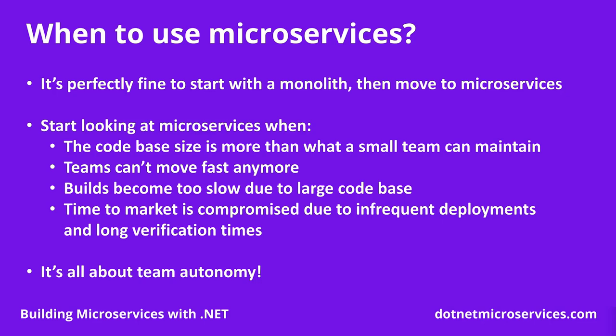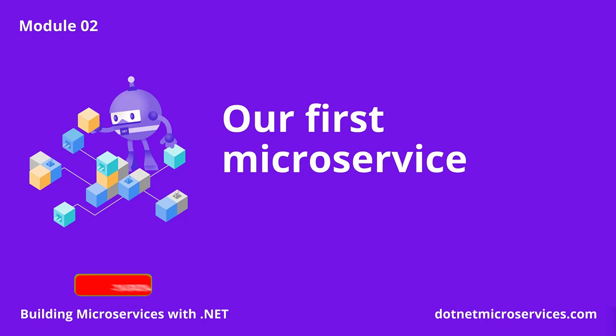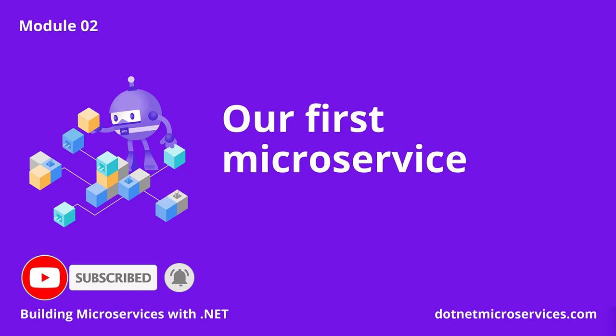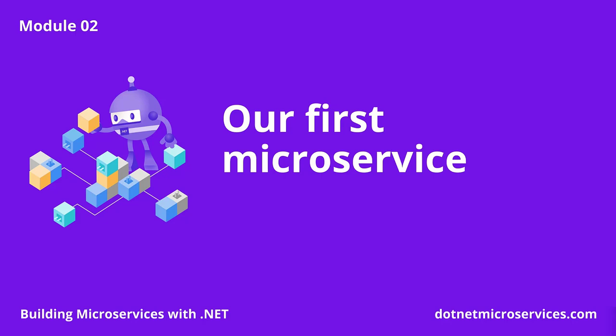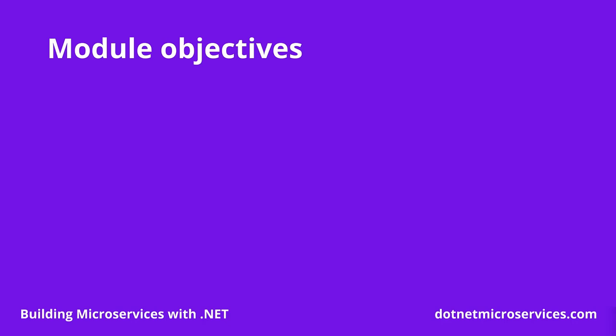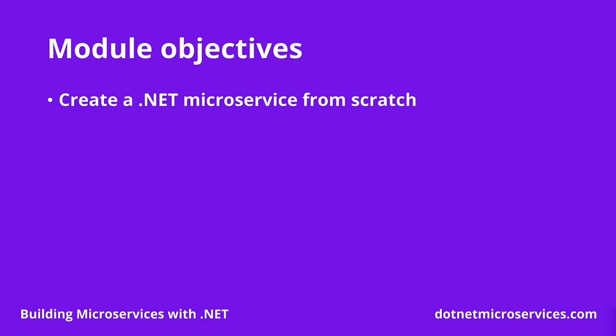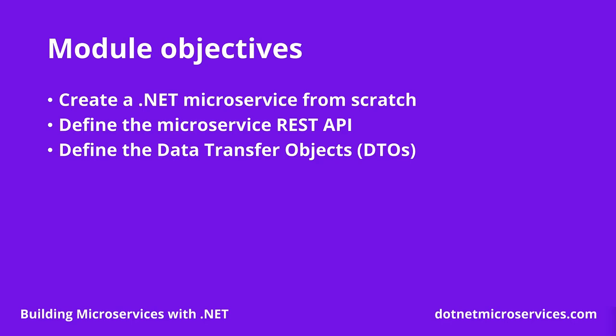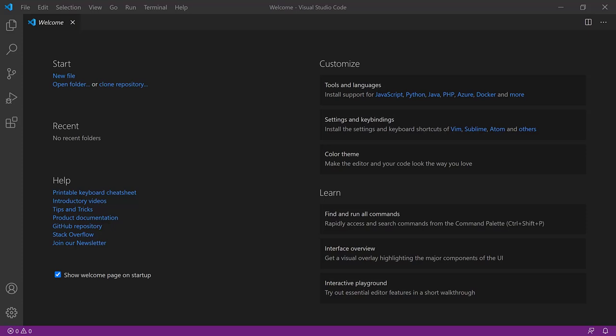In the next module, we will get our hands dirty by building our first microservice. In this module, we will build our first microservice from scratch, which will give you the foundations and tools needed to create microservices with the .NET platform. By the end of this module, you will understand how to create a microservice via the .NET CLI and Visual Studio Code, how to define the microservice REST API with the most common operations, and how to define data transfer objects to establish the contract between our service and its clients.